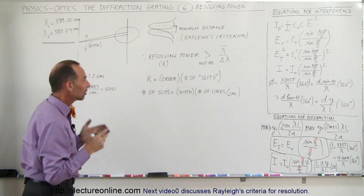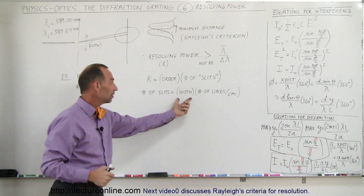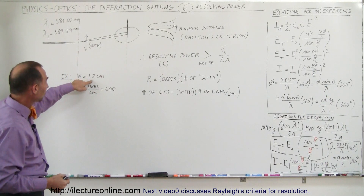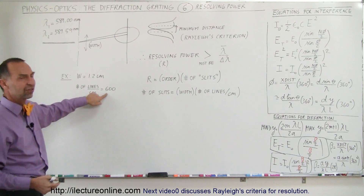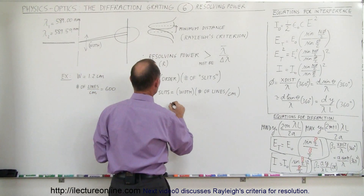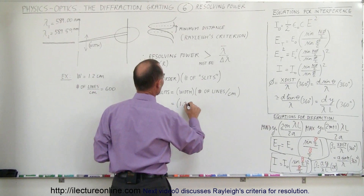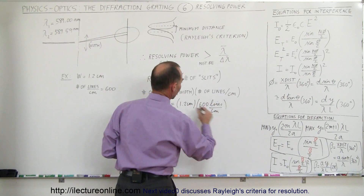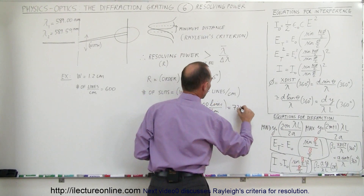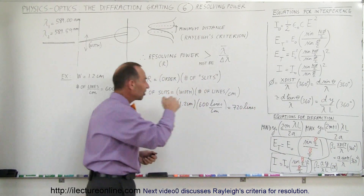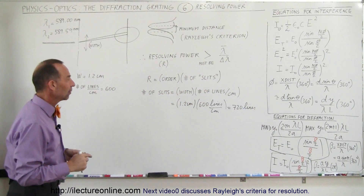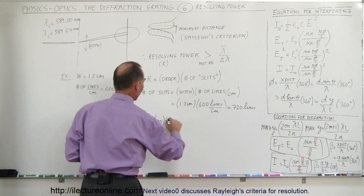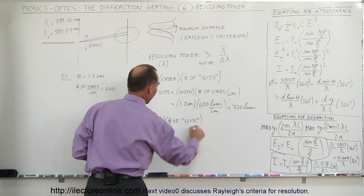What we need to do is calculate the total number of slits, which equals the width of the diffraction grating times the number of lines per centimeter. In our example, the width is 1.2 centimeters and the number of lines per centimeter is 600. So the number of slits is 1.2 × 600 = 720 total lines or slits in our diffraction grating.